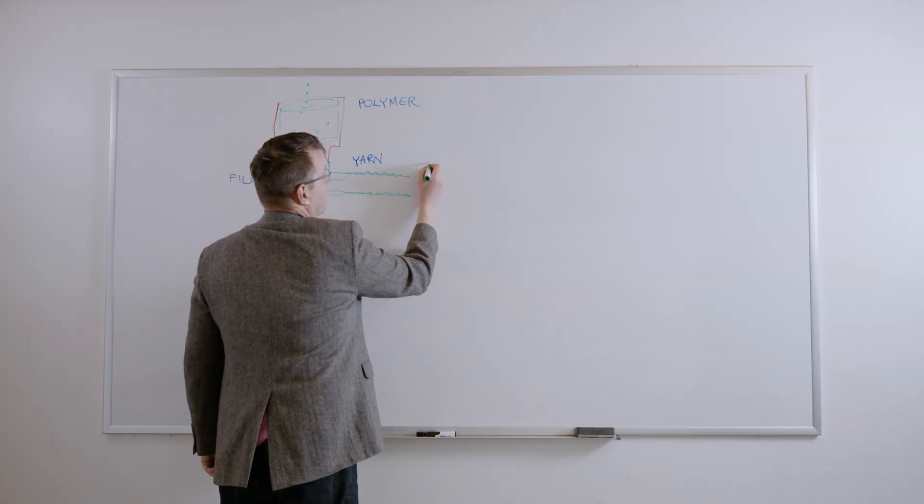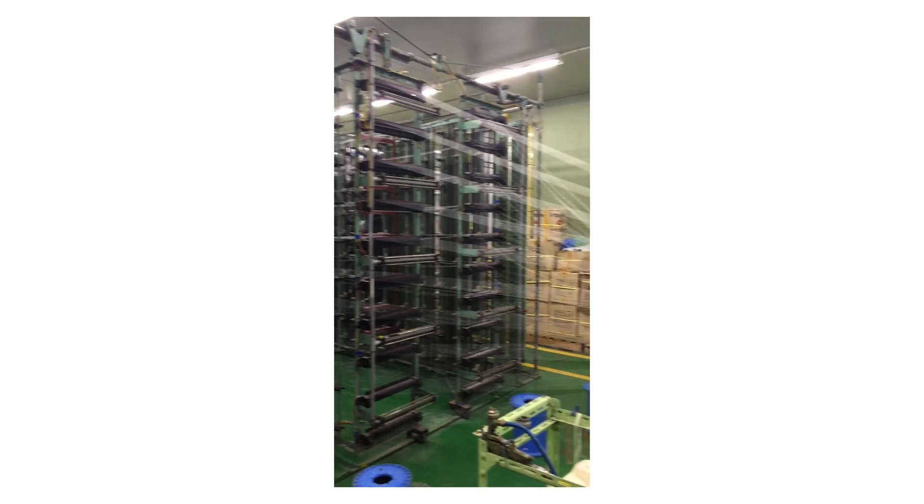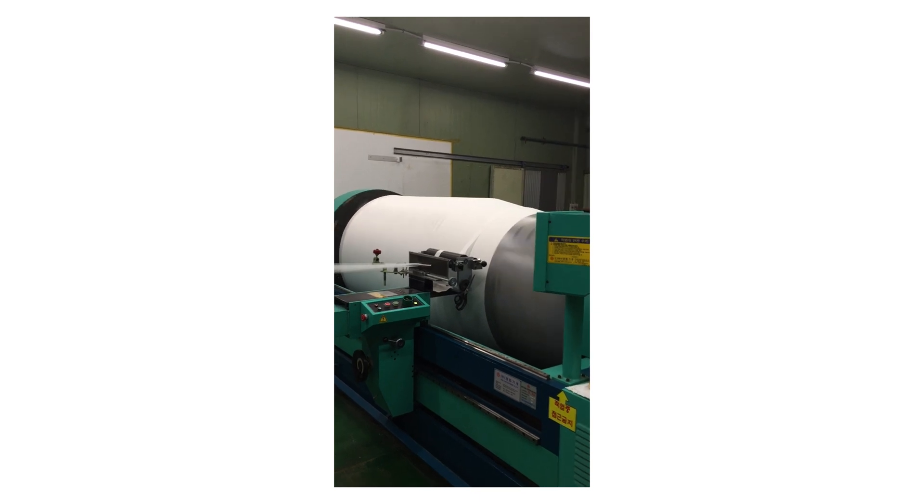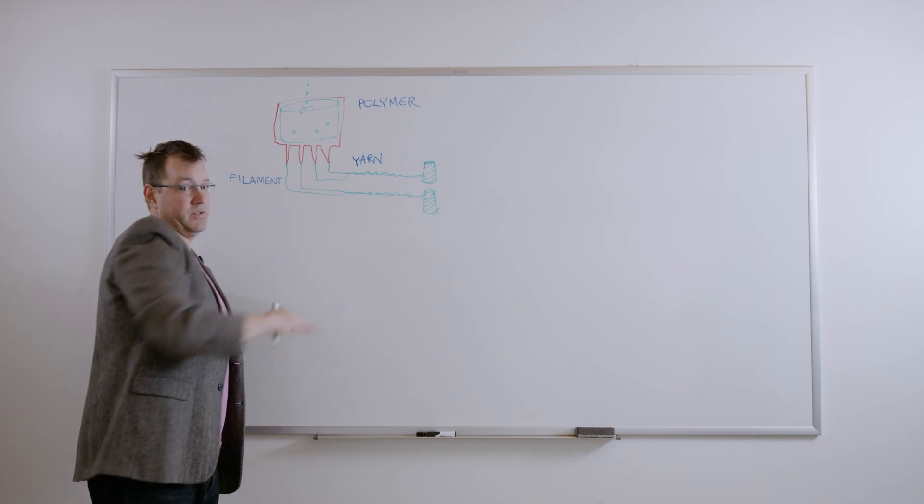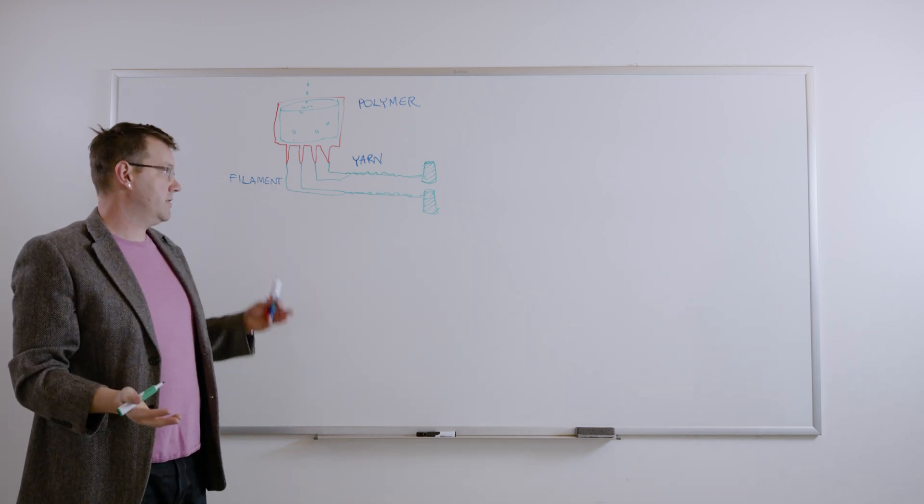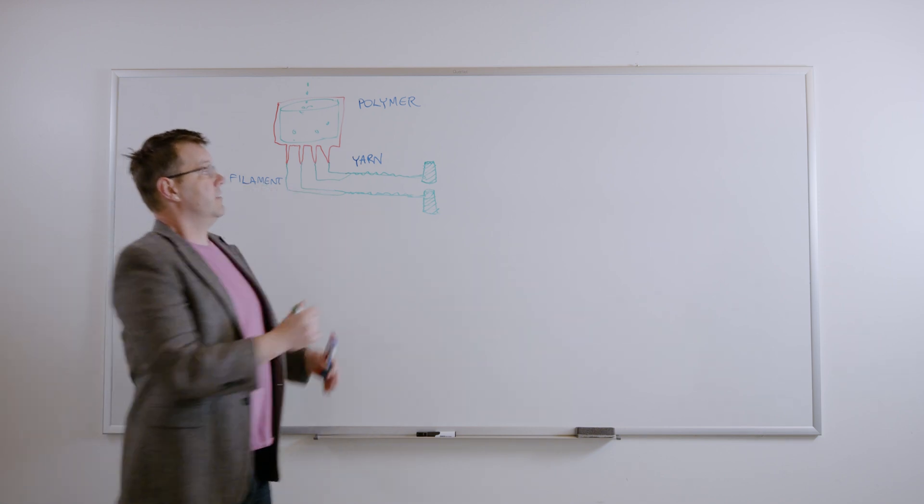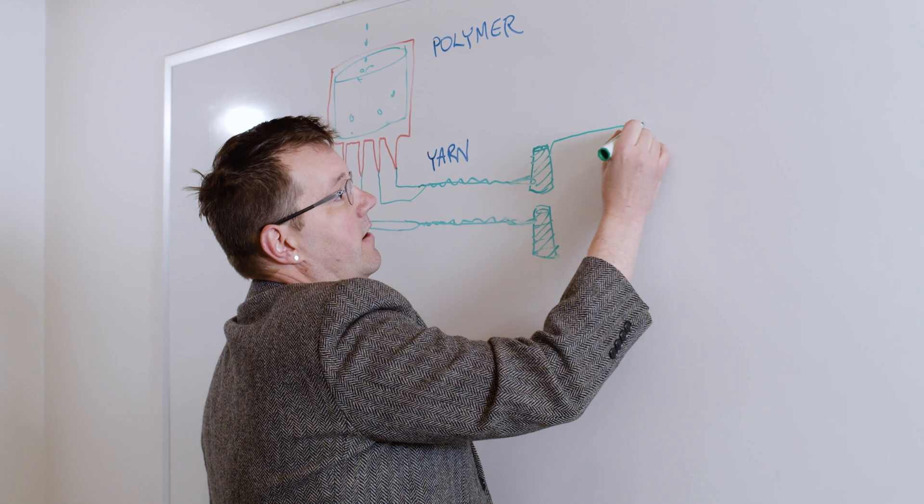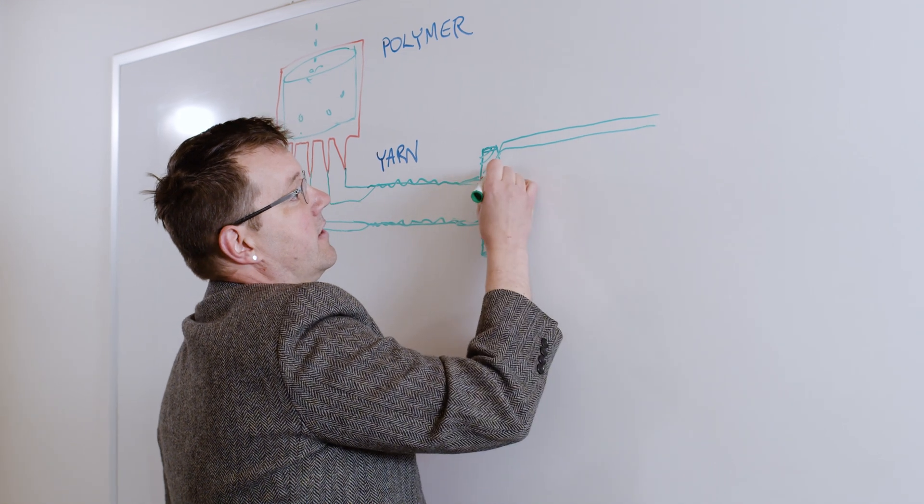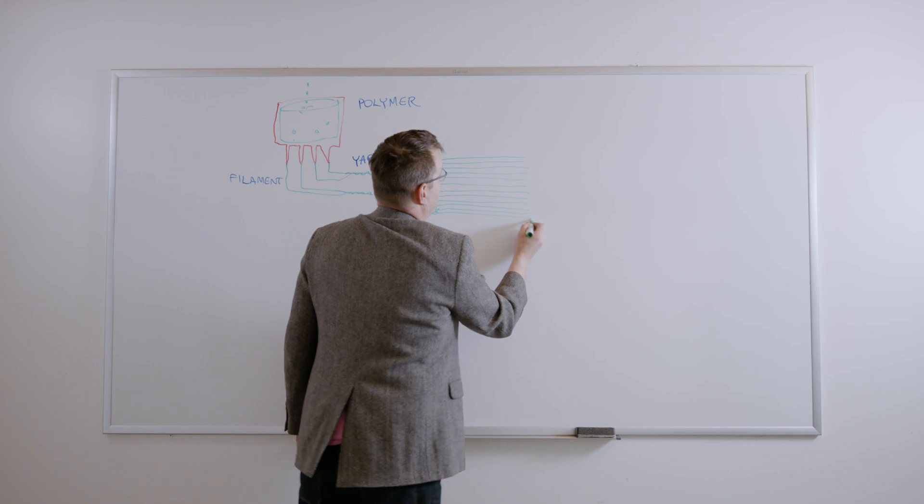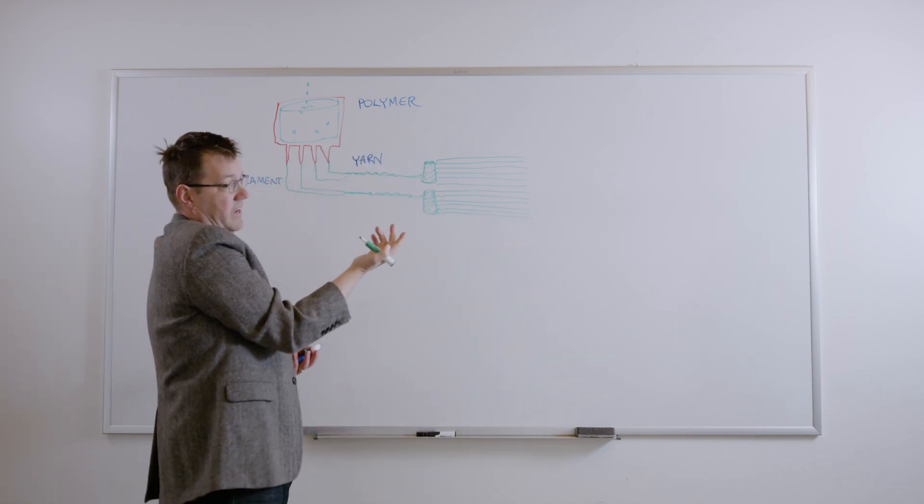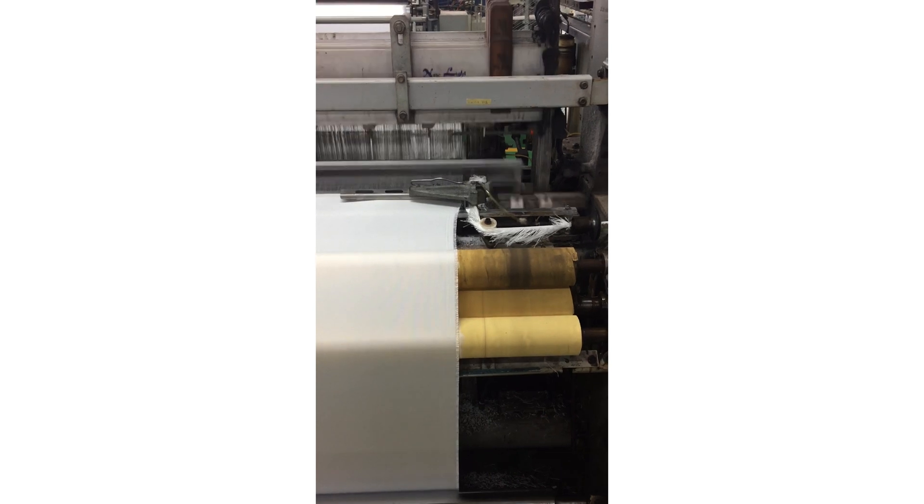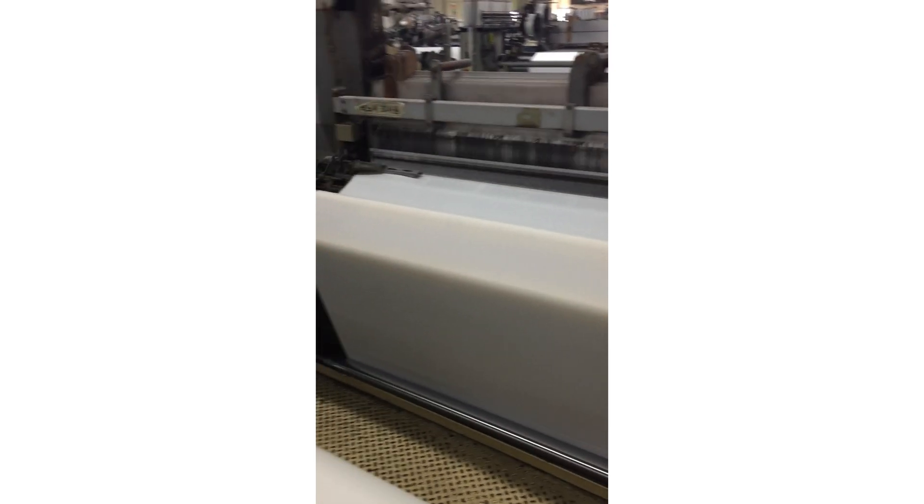So this yarn all gets spooled together on these massive cones, kind of looks like thread that you'd see on your sewing machine but huge. There's a bunch of these cones of yarn that go into the loom area. This is what starts the weaving process. This yarn gets put onto a warp beam - basically just a bunch of parallel rows of yarn that come out. This is the warp in the textile. So the warp gets set up. Then they take, in our case it's an identical yarn and we balance weave, so this gets filled in back and forth. This is the beginning of the textile.